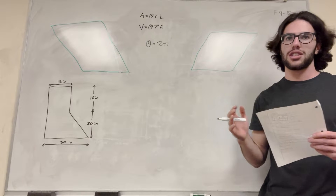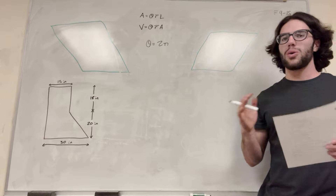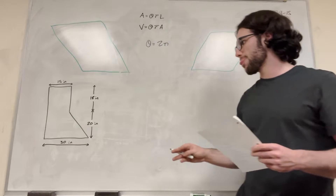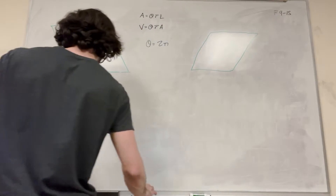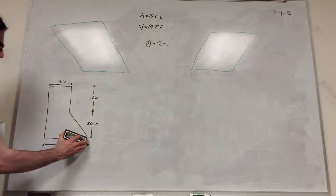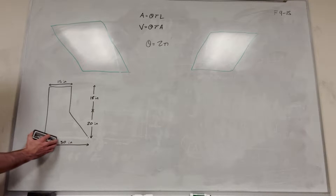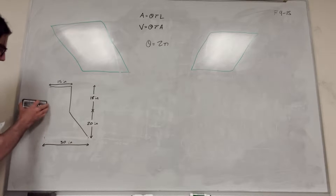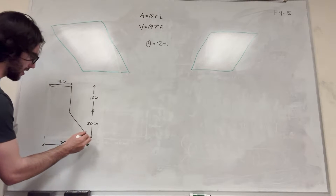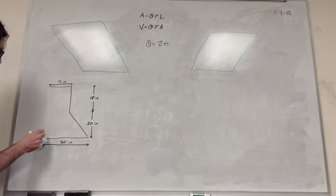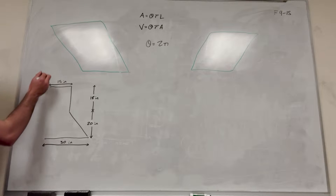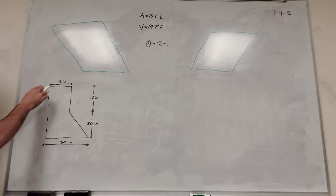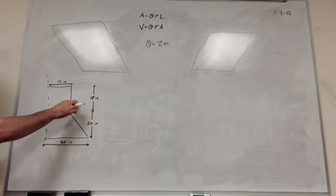Let's start with the surface area. When we have the surface area, we want to only consider the parts that are going to be on the outside. Since this is the axis that we're rotating around, it's going to get flipped all around, so this line is not going to be part of the surface area — but all of the rest of this is.